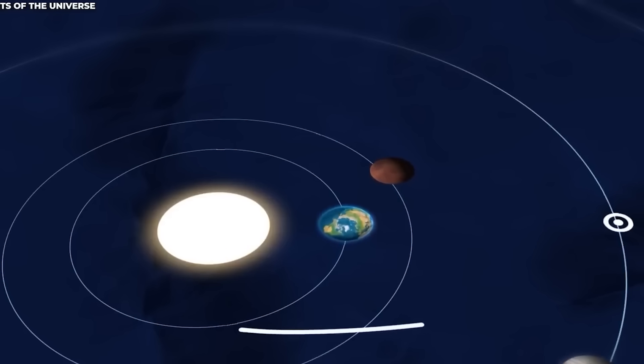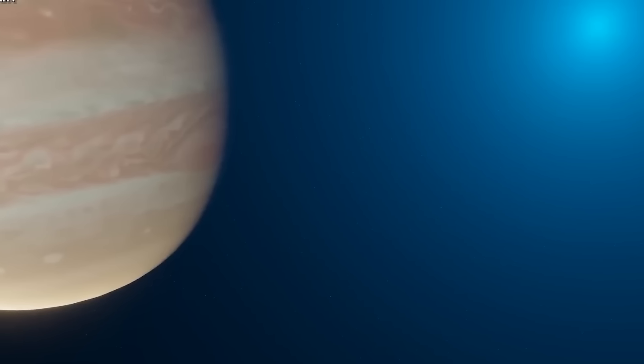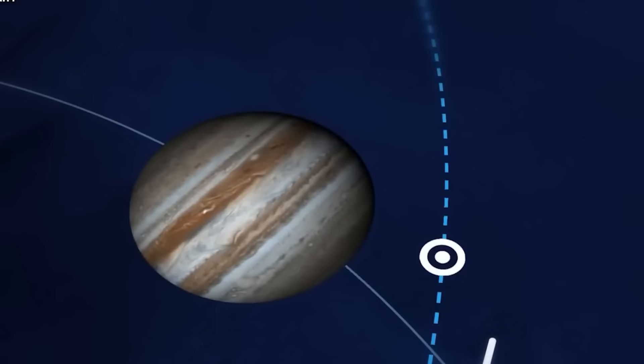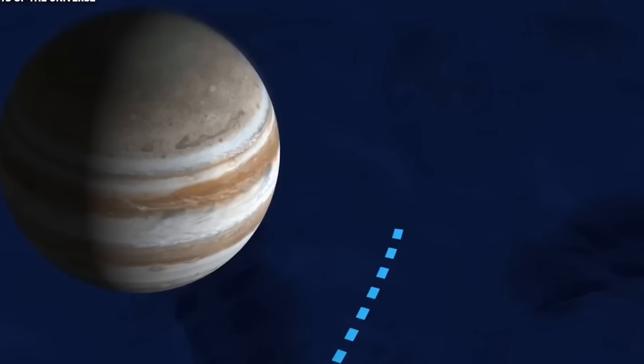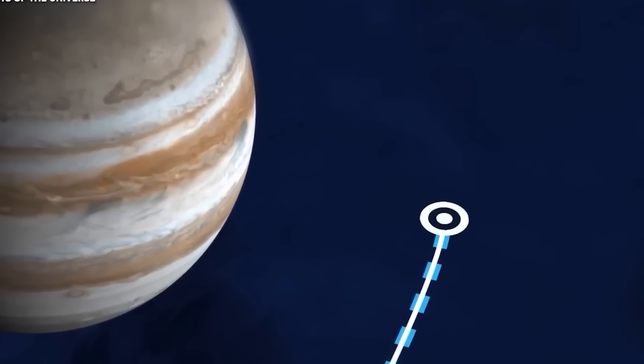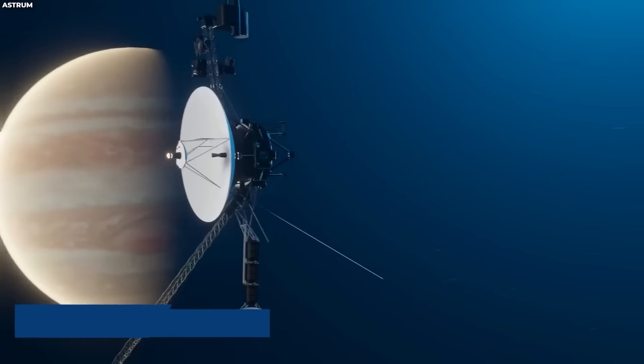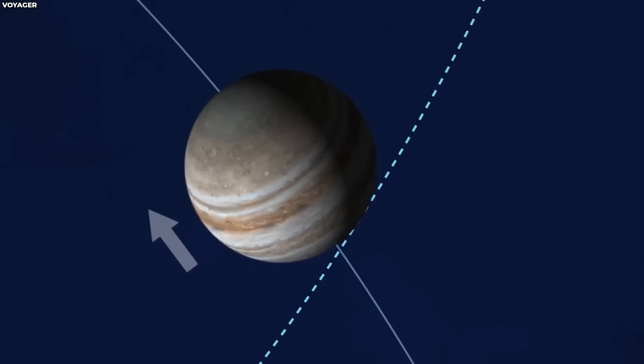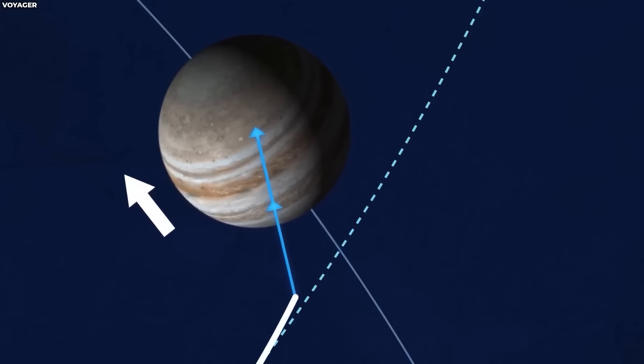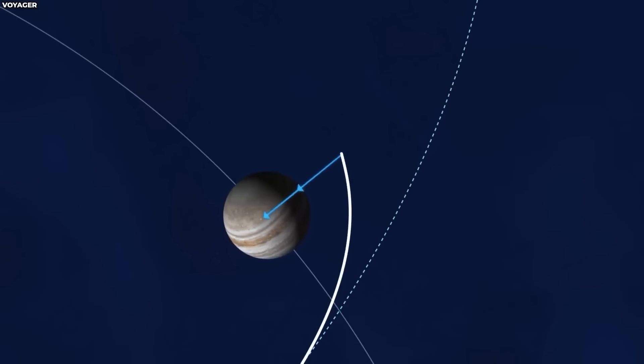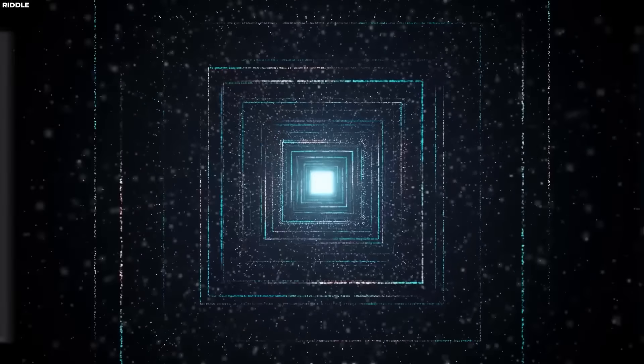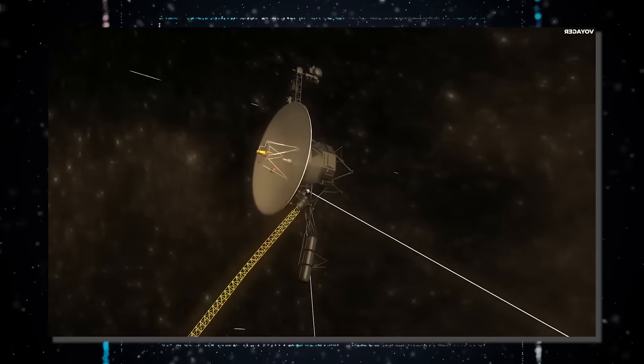Remarkably, the Voyager probes still use 8-track cassette technology, popular in the 1970s. In the early days of space exploration, digital storage technology wasn't advanced. So they used 8-track tapes because they were reliable and long-lasting. These tapes contain important scientific data about the outer planets, their moons, and space beyond our solar system. The real game-changer for the Voyagers was finding active volcanoes on Io, making it the most volcanic place in our solar system. They discovered a possible ocean under Europa's icy surface, raising hopes for finding alien life. They also found geysers on Saturn's moon Enceladus, hinting at liquid water beneath the surface.